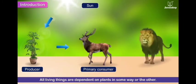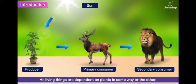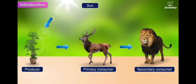In fact, all other living organisms depend upon plants for the food requirement. Like as you can see in this picture, deer and lion both directly or indirectly depend upon plants for food.